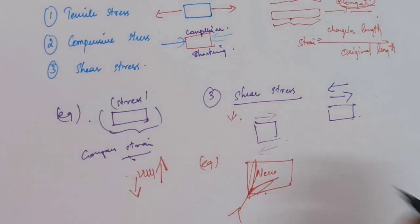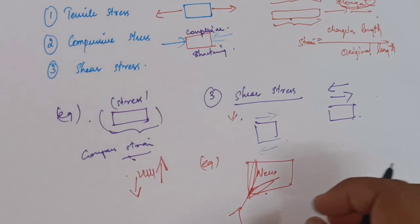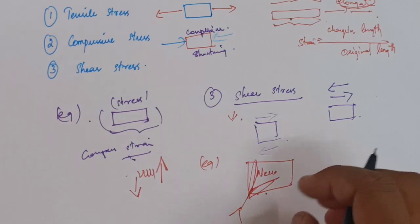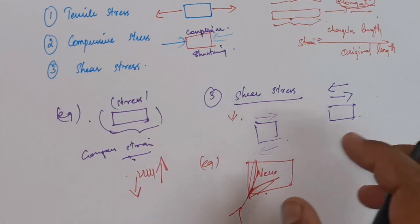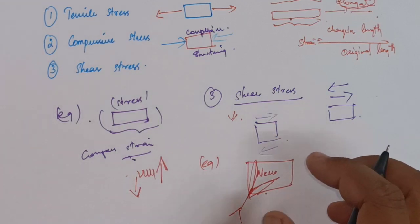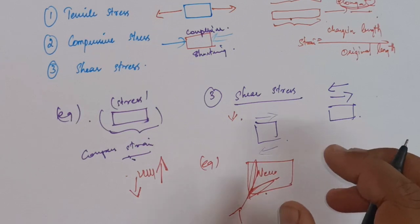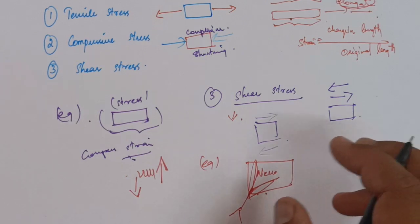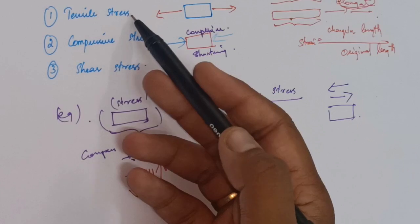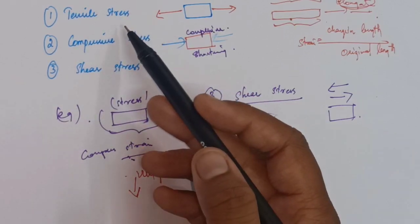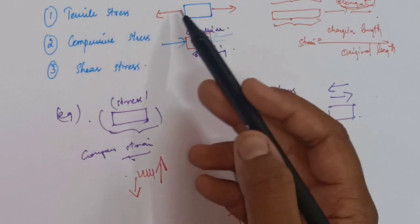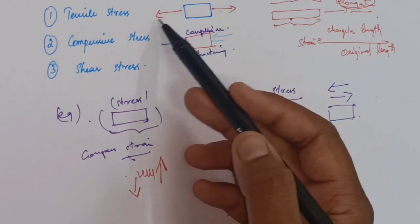In summary, stress is when a force acts on a body tending to produce deformation — a resistance is developed within the body to the external force, and that is called stress. Stress is identified by the formula: stress equals force divided by area, that is force per unit area. There are three types of stresses: tensile stress, compressive stress, and shear stress.